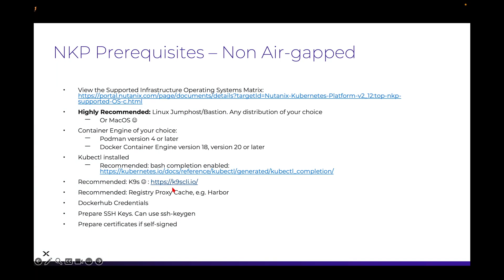I like to use K9s — this gives a very visual way to view workloads in clusters, and it automatically refreshes, which is quite cool. I would also recommend having a registry proxy cache so that you don't constantly pull container images from the public internet — it's cached within a local system. DockerHub credentials are important to avoid rate limits. SSH keys can be generated using the ssh-keygen command, and you'll want to prepare any self-signed certificates if you're not using services like GoDaddy or Let's Encrypt.